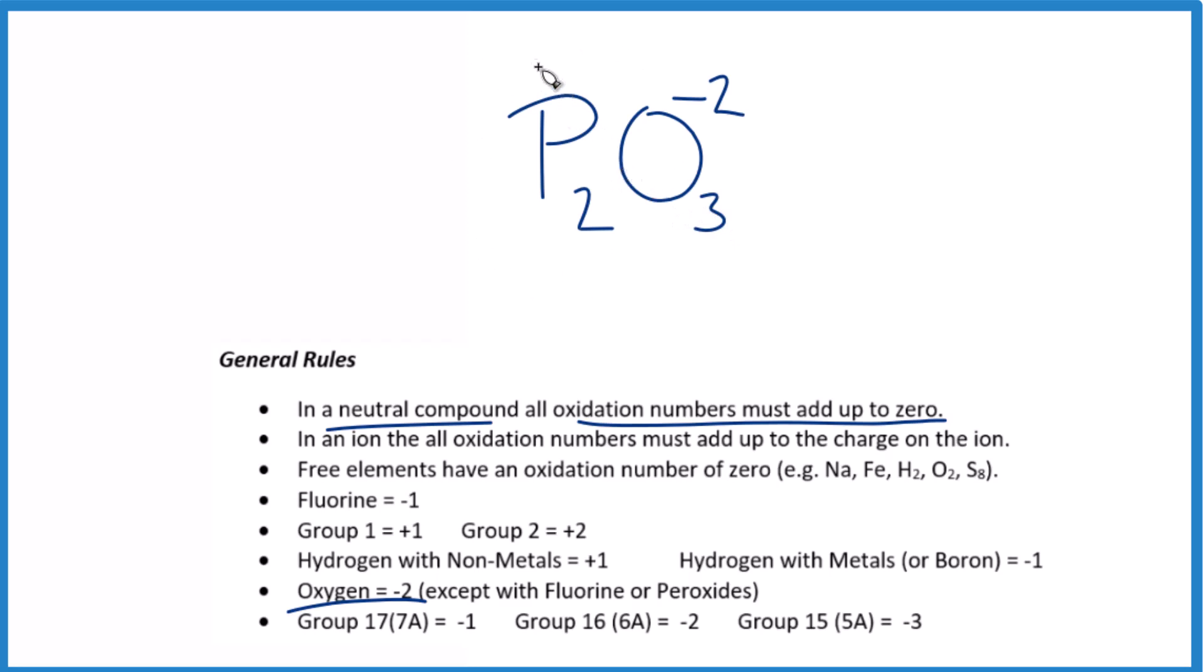That means we could think of phosphorus as x. So three times negative two is negative six, so we need a positive six over here to have our neutral compound.